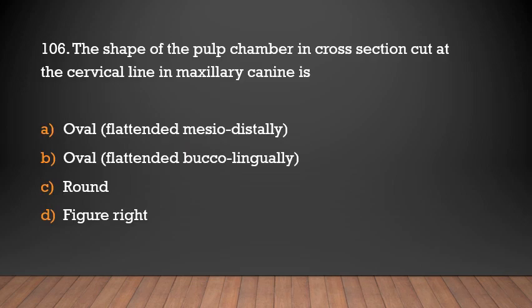The shape of the pulp chamber in a cross-sectional cut at the cervical line in a maxillary canine is: oval flattened mesiodistally, oval flattened buccolingually, round, or figure-eight? Answer: Oval flattened buccolingually.